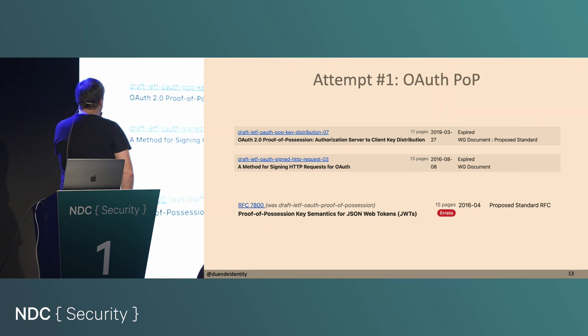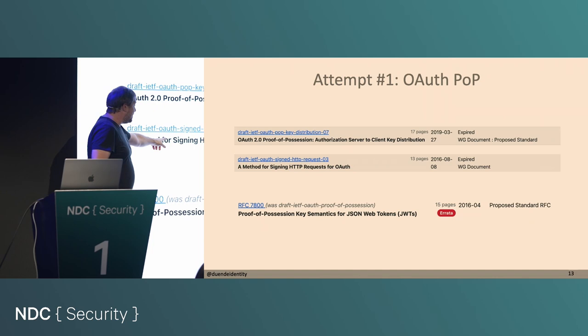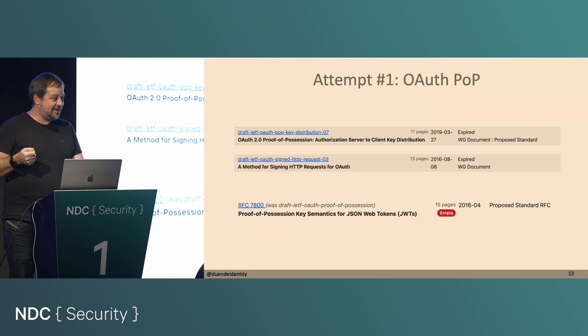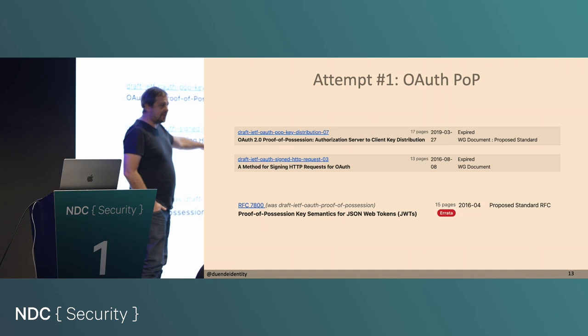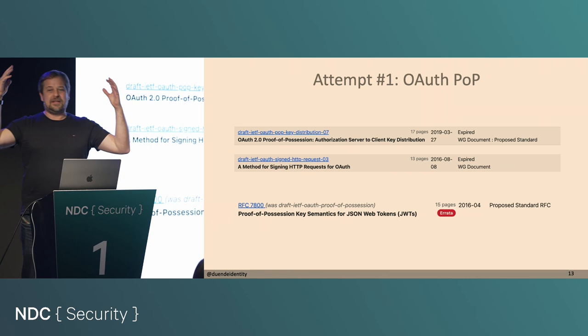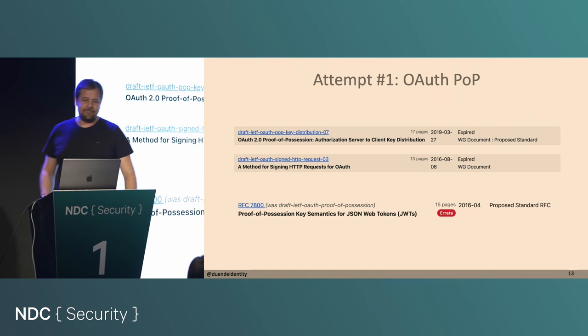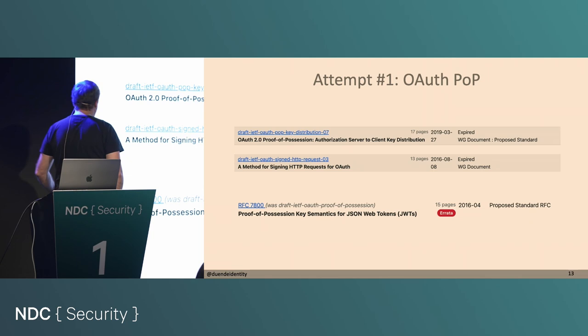There were some attempts to add proof of possession to OAuth. A couple of years later there was a spec for server-to-client key distribution. But the hard part is: once you have that token, how do you bind it to the client cryptographically? They came up with a method for signing HTTP requests. If you opened that spec, it looked pretty much the same as OAuth 1.0 — take the URL, take the parameters, take the body, canonicalize it, sign it. There were fundamental problems: you couldn't do HTTP streaming, for example. So it didn't happen.